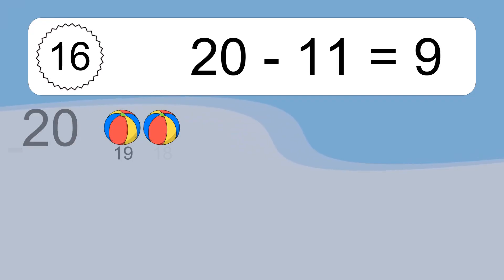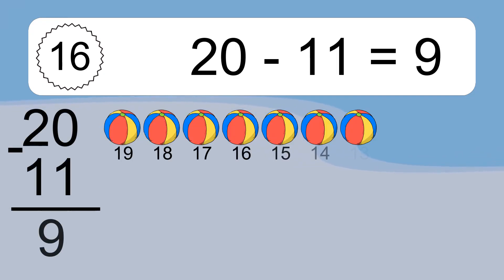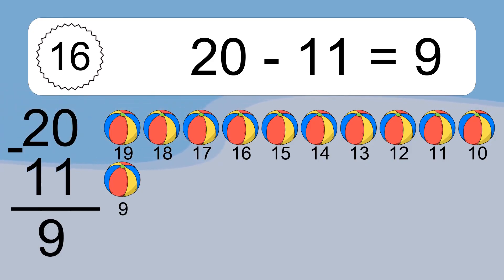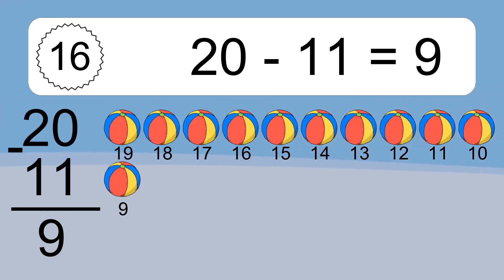20 minus 11 equals what? 20 minus 11 equals 9. Let's count it. 19, 18, 17, 16, 15, 14, 13, 12, 11, 10, 9.